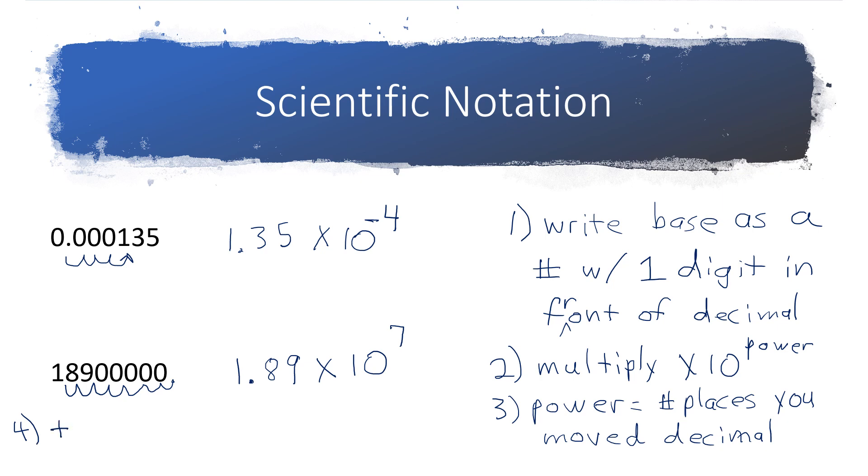A positive power means that you have a big number. And we'll go ahead and add this other one up here because it matches. A negative power means that you have a small number or a decimal number. And big and small here are all relative to one. A positive exponent goes with a number that's bigger than one. And a negative exponent goes with a number that's smaller than one.